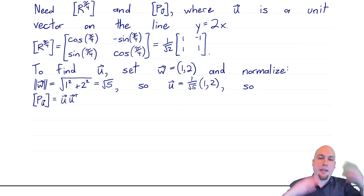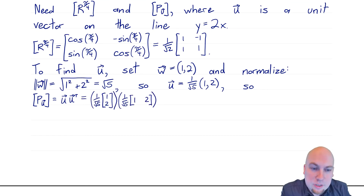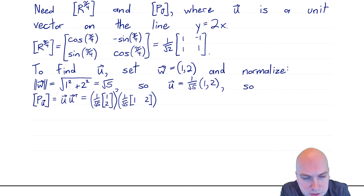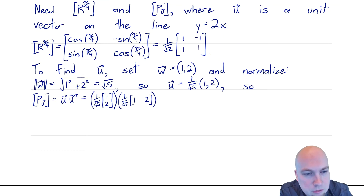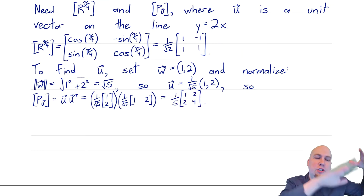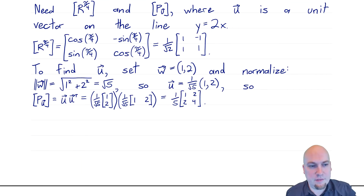Our formula from the previous class says that the standard matrix of the projection onto that line is just u times u-transpose, where you're thinking of u as a column vector. So let's do that multiplication: here's u as a column vector times u-transpose. When you have a column times a row, every one of your dot products has just one entry. It's 1×1 in the top left, 1×2 in the top right, 2×1 in the bottom left, and 2×2 in the bottom right — so you get a 2×2 matrix. The 1/√5 factors combine to give 1/5 out in front, and the four products give the four entries of the 2×2 standard matrix.